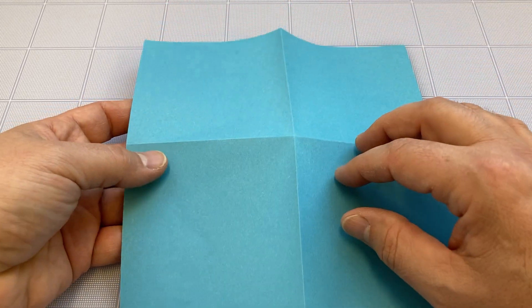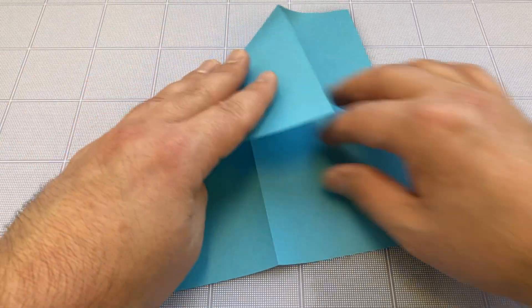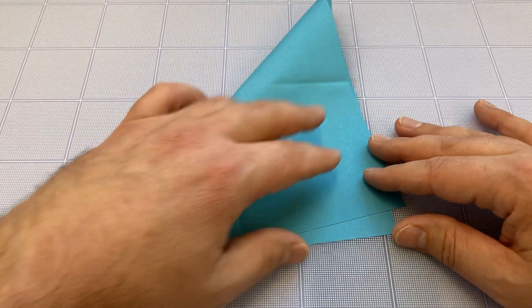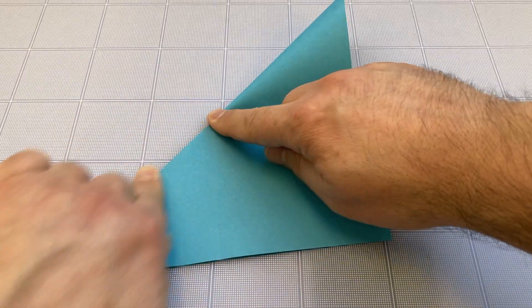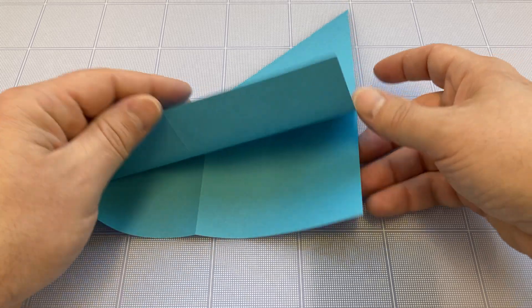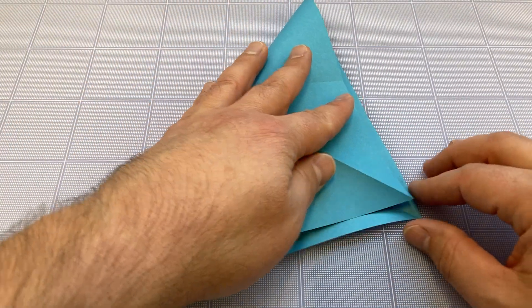Now fold this diagonally, taking one corner across to the other corner and crease that. Open it up and do the same thing with the next corner.